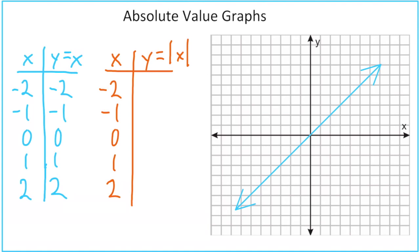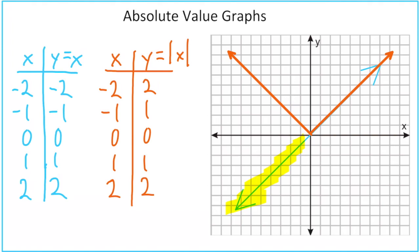Now let's move on to absolute value using the same x values. Absolute value is the distance from 0, so negative 2 is 2 units from 0, meaning the absolute value of negative 2 is 2, and the absolute value of negative 1 is 1. Another way to think about it: every time you take the absolute value of something, you just get a positive answer. So our first two values become positive instead of negative, and our last three stay the same.